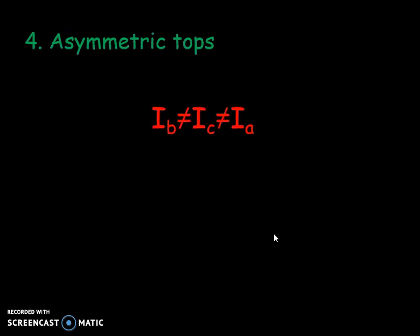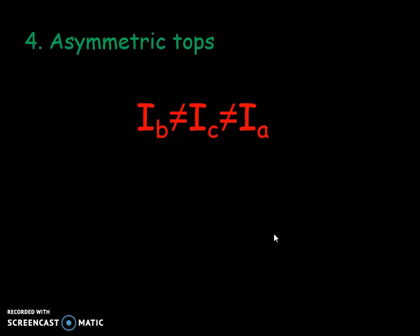The fourth category is the asymmetric top molecules, to which majority of molecules belong and have all the moment of inertia different. A simple example is water. All these types of molecules except symmetric top would give rise to rotational spectra.